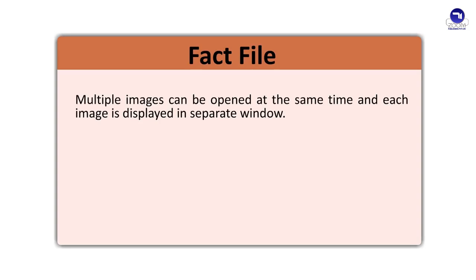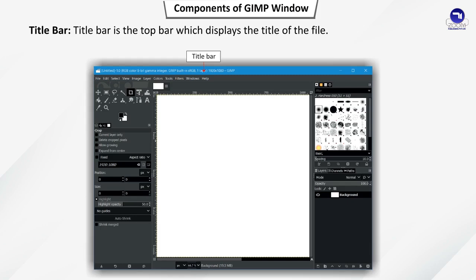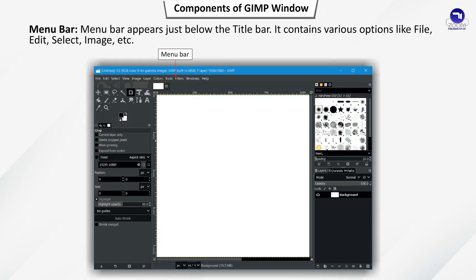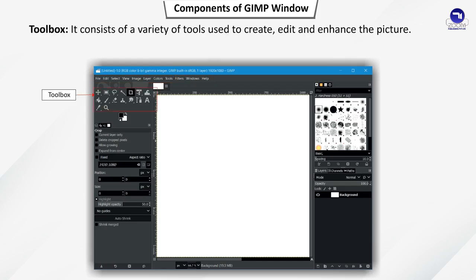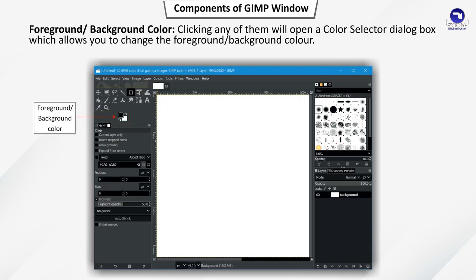Title bar is the top bar which displays the title of the file. Menu bar appears just below the title bar and contains various options like File, Edit, Select, Image, etc. Toolbox consists of a variety of tools used to create, edit and enhance the picture. Foreground or Background color: clicking either of them will open a color selector dialog box which allows you to change the foreground or background color.